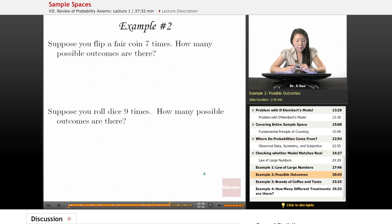So example two. Suppose you flip a fair coin seven times. How many possible outcomes are there? So thankfully it doesn't say list all of them, it just says how many possible outcomes. Think of each coin flip as a slot where one of two things can happen, heads or tails.